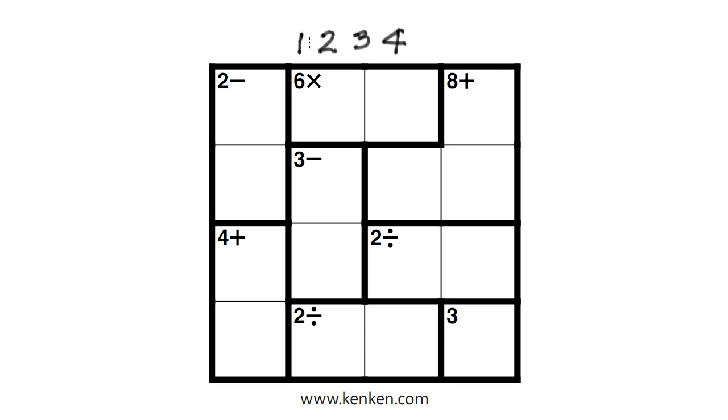For those of you new to KenKen, the first two rules are the same as Sudoku. In other words, if you look at this first row right here, as in any row, all four numbers have to show up, no repeats. And in each one of the columns, such as this one here, all four numbers have to show up with no repeats.